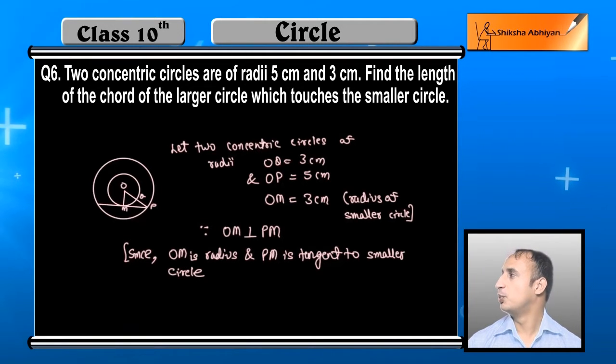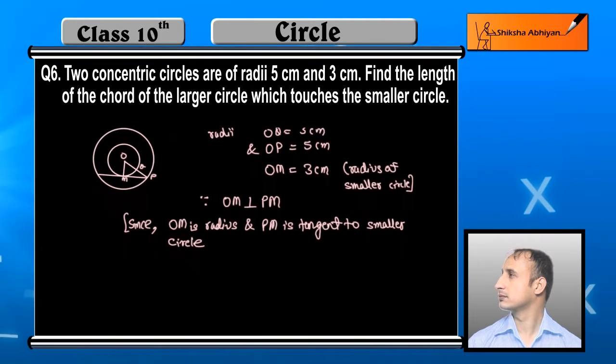...of the smaller circle. Therefore, angle OMP is equal to 90 degrees.